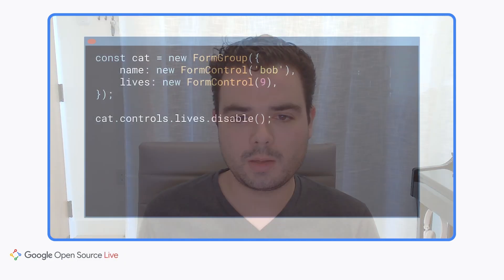Another crucial backwards compatibility issue involves disabling controls and the effect that disabled controls have on the form's value. With Angular forms, disabled controls are not included in the form's value. The original reason for this is actually that this is how native HTML forms behave when you submit them — if you disable fields and then submit, those fields will be missing from the submitted form result. So Angular forms behave the same way, but because of this, it impacts the type of your form.